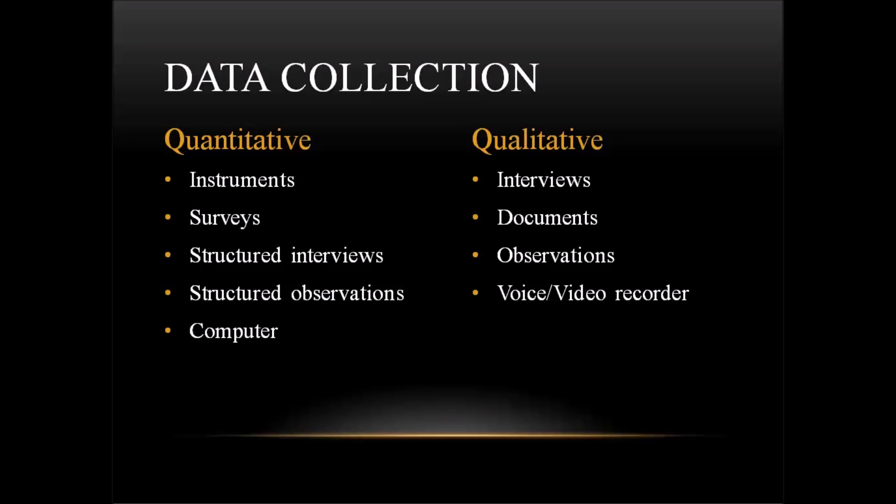They use documents, observations. I spoke about that before—participant observation and direct observation. The data is usually initially recorded either on a voice recorder or a video recorder, or it's often recorded. Sometimes it's also recorded in a notebook, handwritten. Eventually, in qualitative research, a computer is going to be involved. The data is going to be moved to a computer. But for the initial data collection, that's not where the data is initially recorded in many instances.